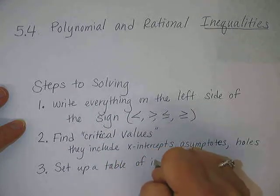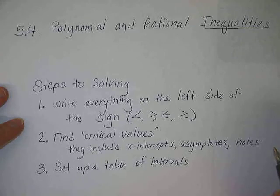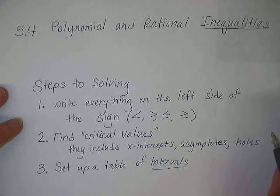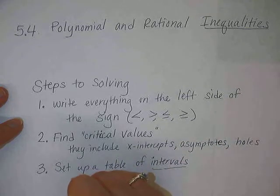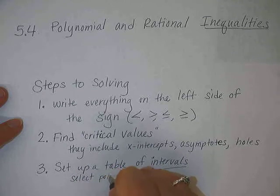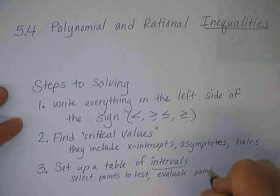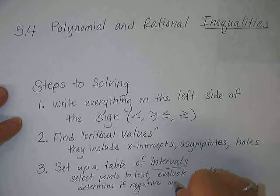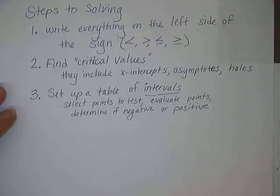The next step is to set up a table of intervals. Intervals are groups of numbers with a starting and an ending point, giving you a range of values. When we set up our table of intervals, we are going to select points to test, evaluate those points, and determine if they are negative or positive.